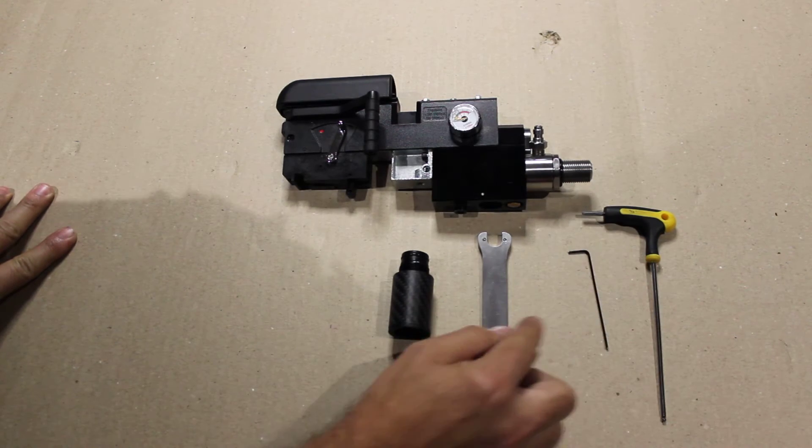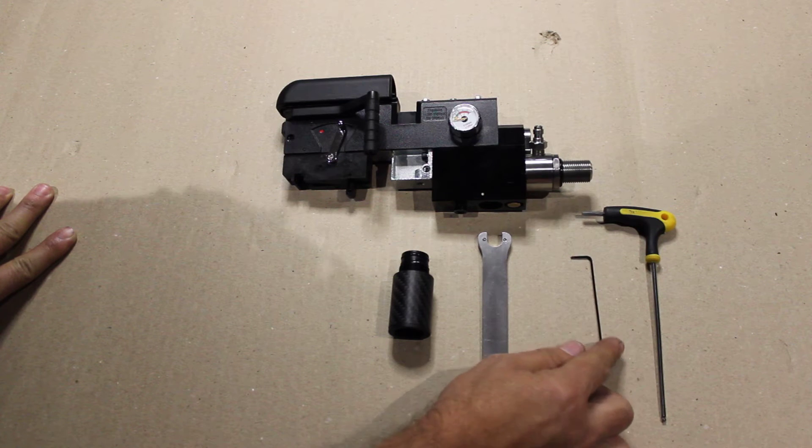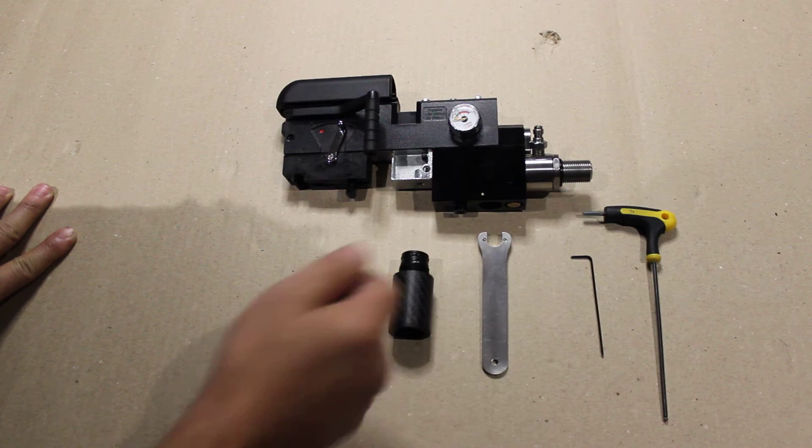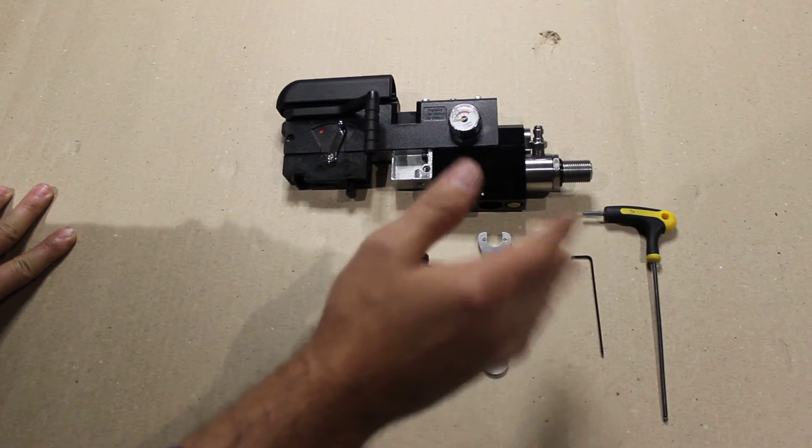Okay, so the tools that you will require is a 1.5 millimeter Allen key and a 3 millimeter for the bleed nut itself if there's still air in the gun.